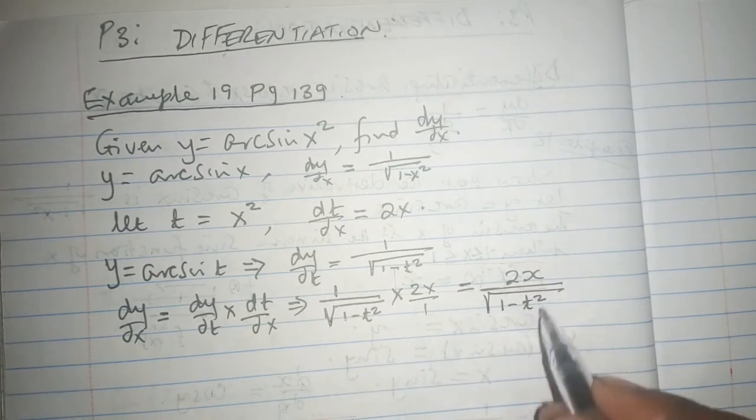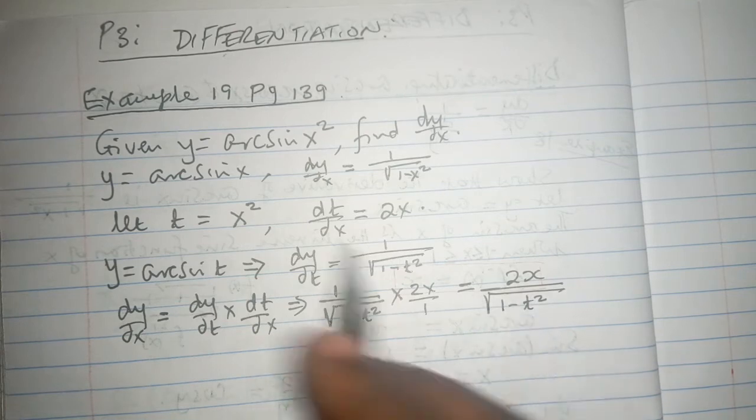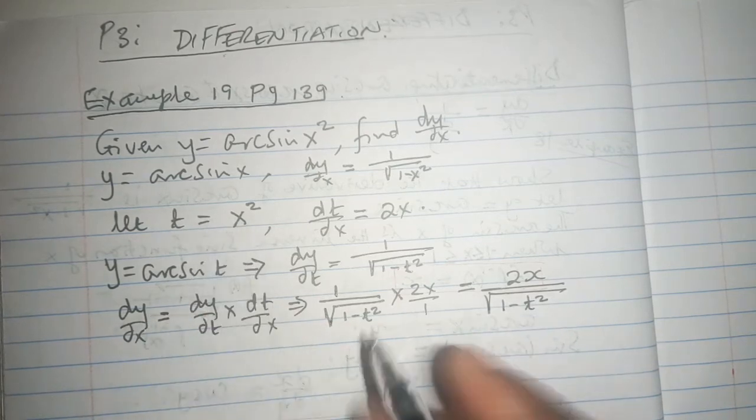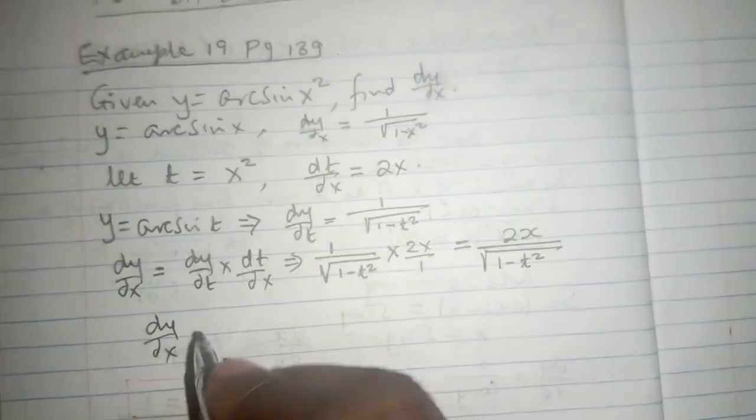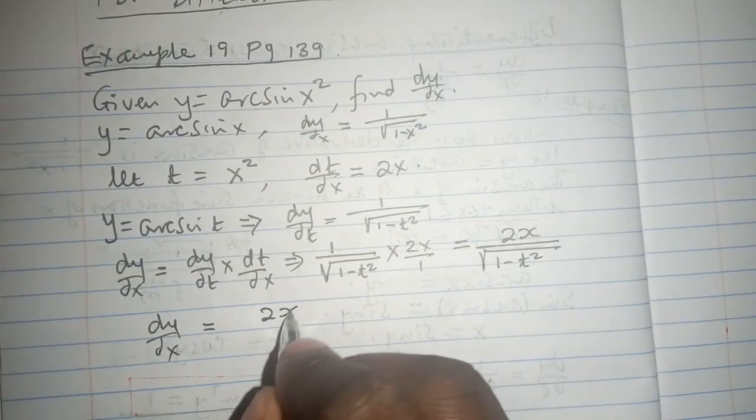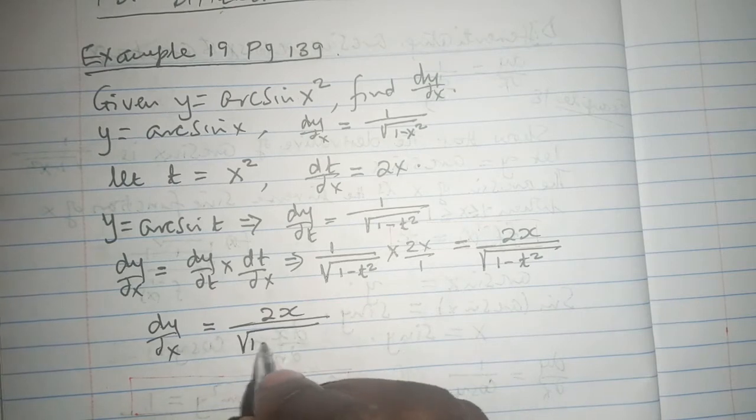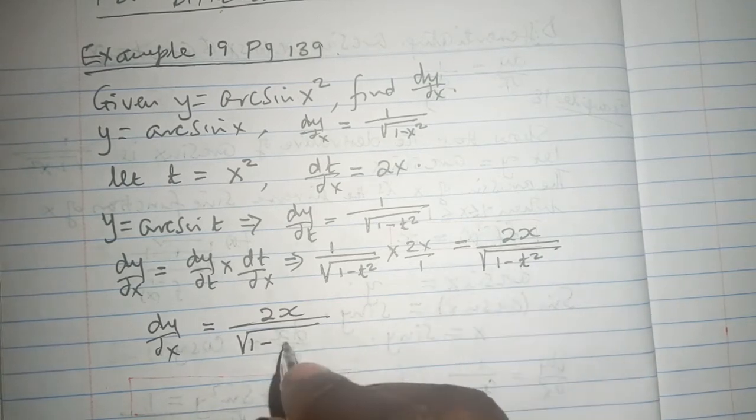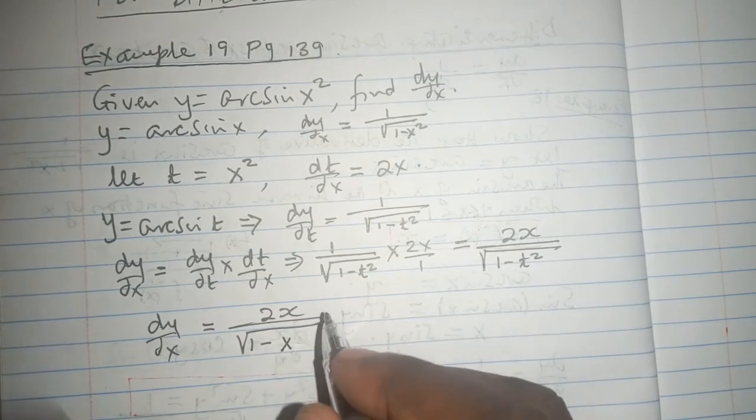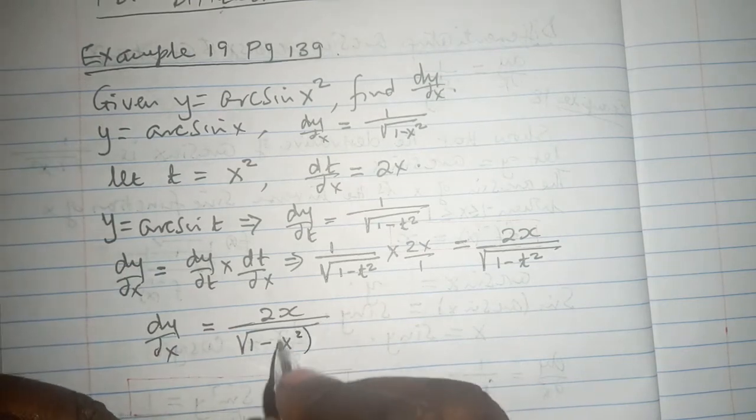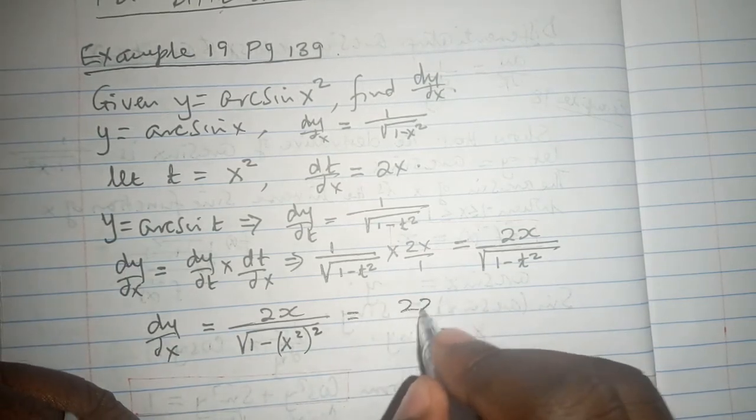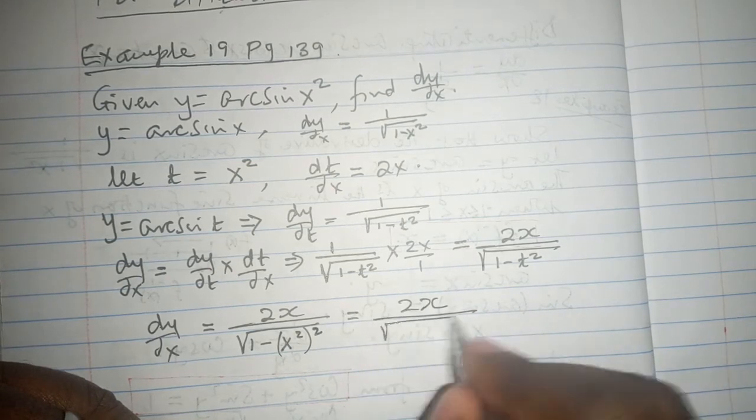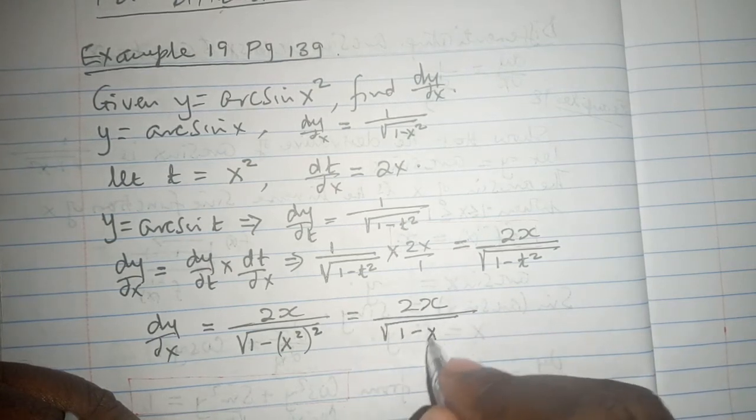At that particular point, we must now substitute t with what x was. So dy/dx eventually is going to be the 2x all over the square root of 1 minus t squared, and t was x squared, so that is t squared. So you're going to have 2x all over the root of 1 minus x raised to power 4.